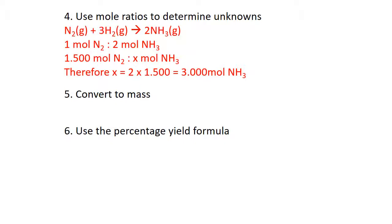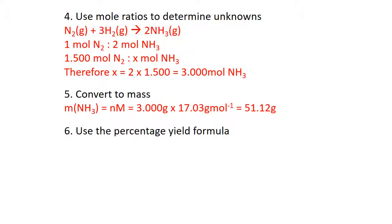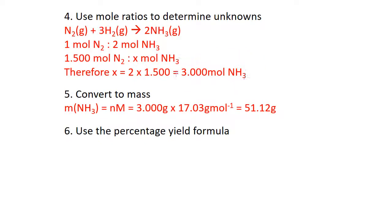Now that you have the number of moles of ammonia, convert that to a mass by rearranging the equation. The mass of ammonia is the number of moles times the molar mass: 17.03 from the periodic table, giving 51.12 grams of ammonia at 100% theoretical yield.